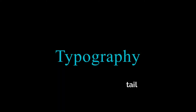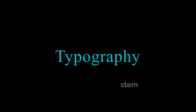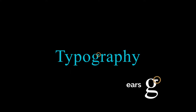Let's expand our typography vocabulary. The tail is the very tip of the character. The descender, as we know, makes up the entire bottom section, but the tail is only the very tip. This is an example of the stem of the character. Ears are anything that expands outside of the side of the character, including this G.